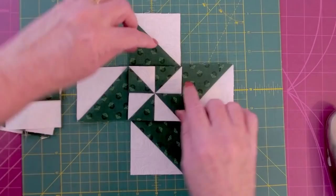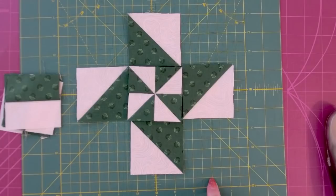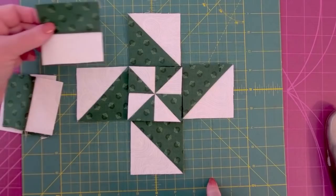And finally, the last half square triangle goes in the last spot. The corners line up to form an arrowhead. And if you'll notice, we have a beautiful friendship star. What a great way to start this block.